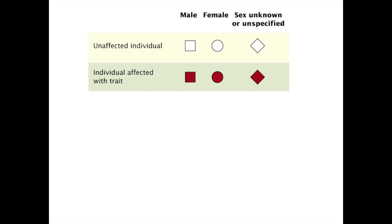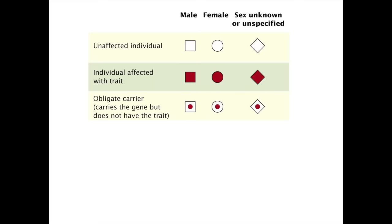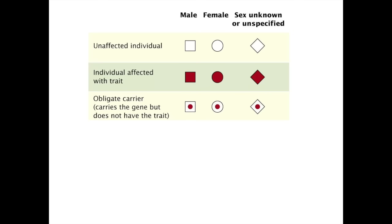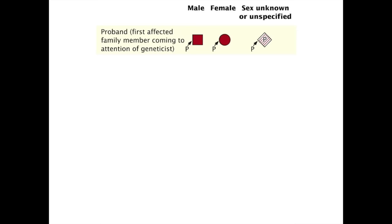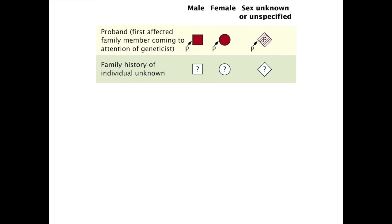The sex unknown or unspecified is denoted by a diamond shape. All individuals that are affected are usually colored. Obligate carriers — someone who carries the gene but does not have the trait — are marked by having a colored circle in the center. An asymptomatic carrier, someone who's unaffected at this time but may later exhibit a trait, has a line through the symbol. Multiple individuals can be marked by putting a number inside the symbol.